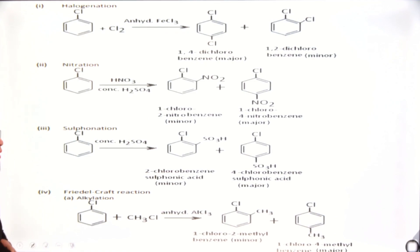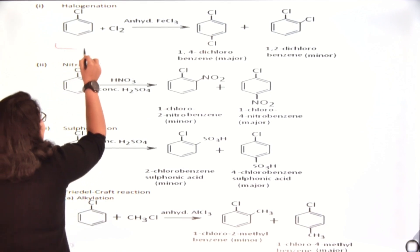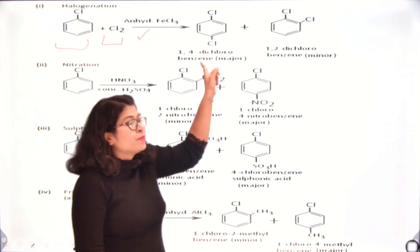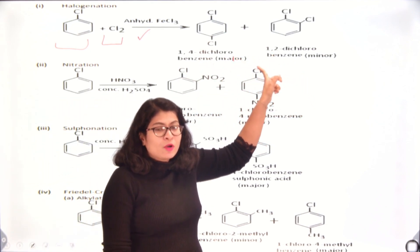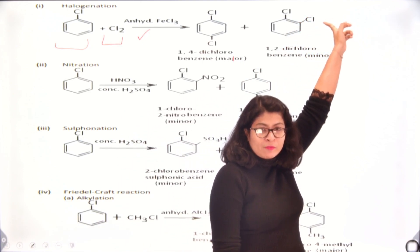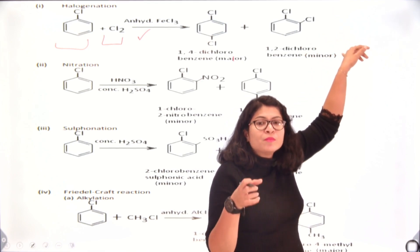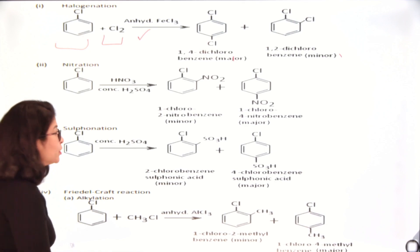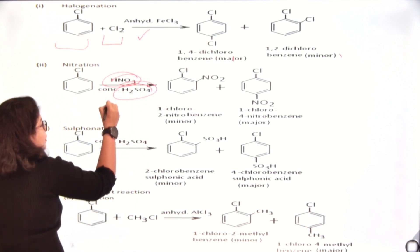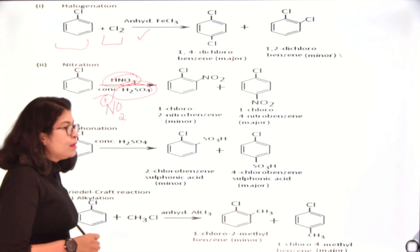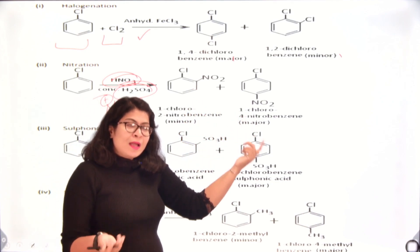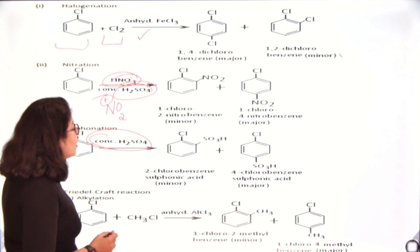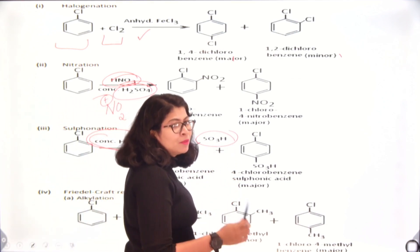Chlorobenzene reacts with Cl2 in the presence of anhydrous FeCl3 (a Lewis acid) to give ortho and para substituted products, with the para product dominating due to steric hindrance at the ortho position. For nitration, a nitrating mixture of HNO3 and H2SO4 is used; the nitronium ion NO2+ is generated and substituted at ortho and para positions, with para dominating. For sulphonation, concentrated H2SO4 is used where SO3H is introduced at ortho and para positions, and para is again the major product due to symmetry.